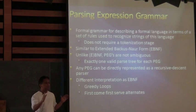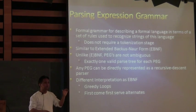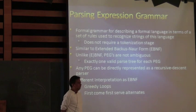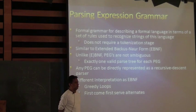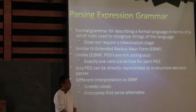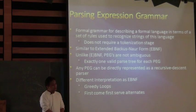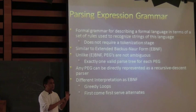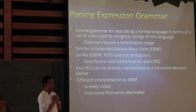Any PEG can be represented as a recursive descent parser — there's a one-to-one correspondence. It has different interpretation than EBNF. Most particularly, we have greedy loops, so it will try to parse as much as it can without regard for the tail. Alternatives are first-come, first-served — the first one that matches wins. Regarding the lexer: X3 will have a lexer in due time, but it's not yet ported. What we have now is the PEG parser portion. We don't have Karma yet (output generation), and we don't have the lexer yet.